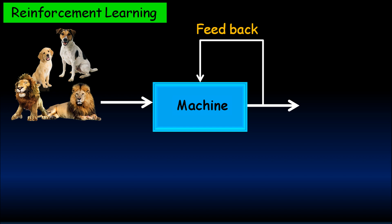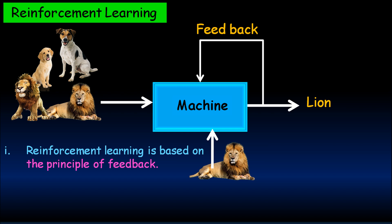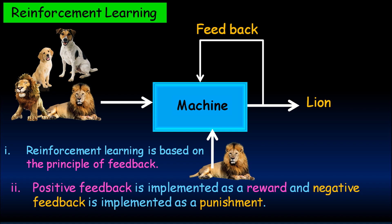So, in the testing phase, if we give an image of an animal, the machine will be able to answer. Reinforcement learning is based on the principle of feedback. Here reinforcement is nothing but our feedback to the machine. Positive feedback is implemented as a reward, and negative feedback is implemented as a punishment.